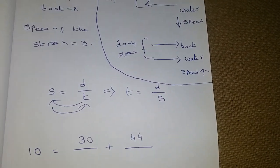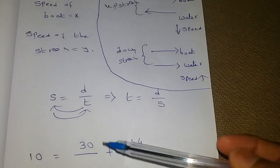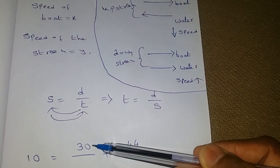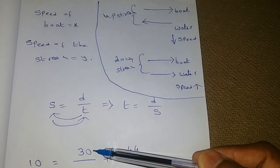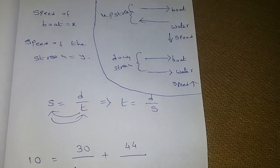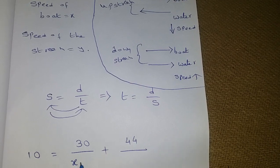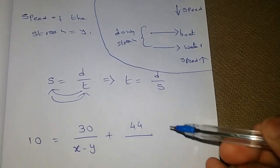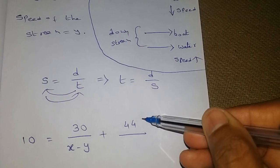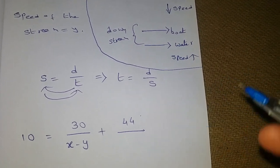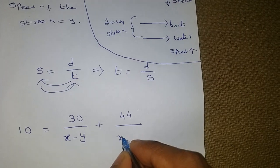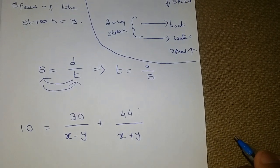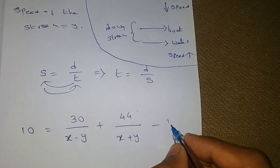What about the speed? The 30 kilometers is traveling upstream, so upstream means speed will decrease — that is speed of the boat minus speed of the water flow. For 44 kilometers downstream, speed of the boat will increase — so it is speed of the boat plus speed of the water. This gives us the first equation.